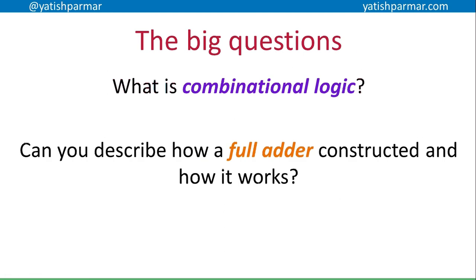So to summarise: you should be able to explain what combinational logic is - where the output is a function of the present inputs. You should be able to describe how a full adder is constructed using two half adders, have memorised the circuits for the half adder and full adder and their truth tables, and explain how full adders can be joined in sequence to add up large binary numbers. That's it - done.